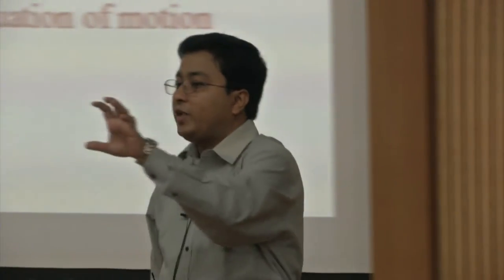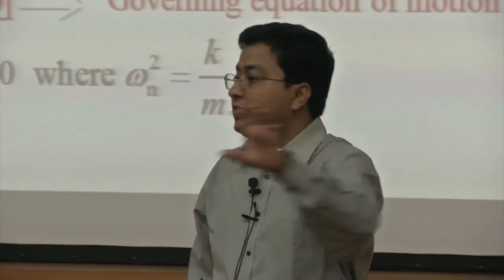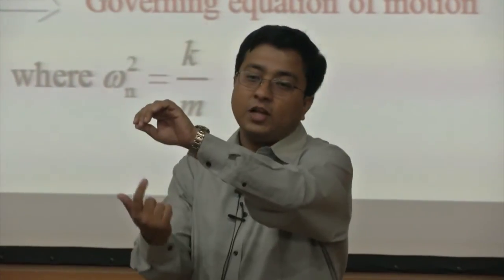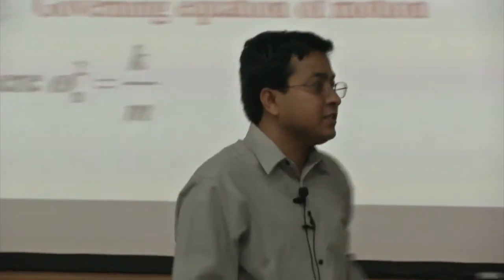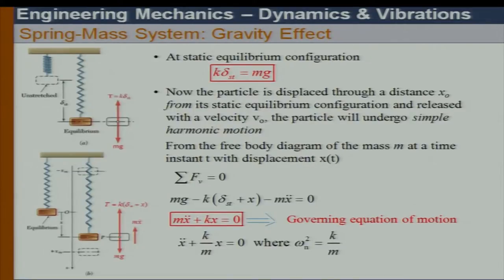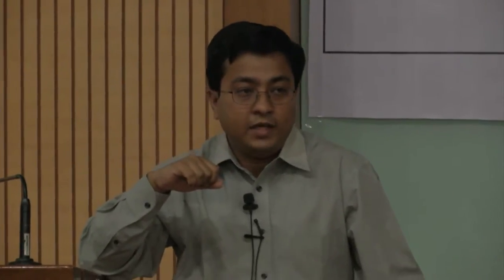Now for a spring-mass system where gravity plays a role because the system is hung vertically, we first study the problem in terms of static equilibrium. The spring force equals K times delta_ST, where delta_ST is the static displacement of the mass, and that equals mg. That is the static equation — we calculate the equilibrium configuration of the mass.